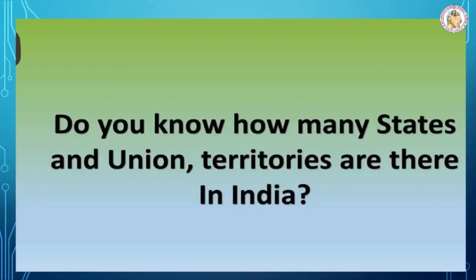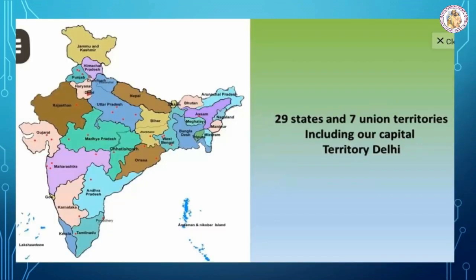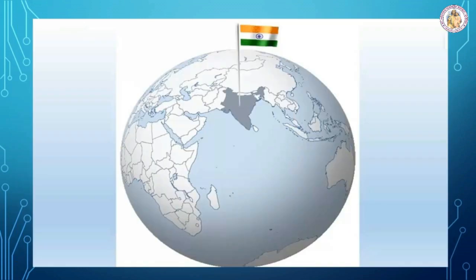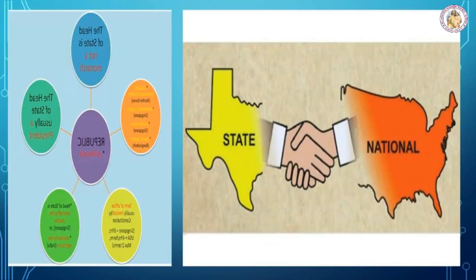India has a separate system of administration for the union, states, and union territories. Do you know how many states and union territories are there in India? There are 29 states and 7 union territories including our capital territory Delhi. India's power is divided between two sets of governments — one at the central in Delhi and separate governments for all the states. This is called the federal system.